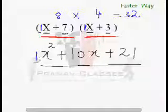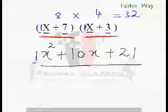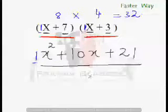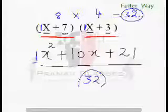Now, this is 1. So, 1 plus 10 is 11 and 11 plus 21 is 32. That's absolutely correct.